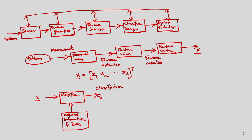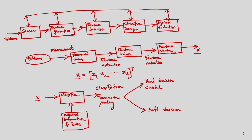Classification means decision making, and there may be two types of decision making: one is hard decision making and another is soft decision. In hard decision, we consider classical set theory, and in the case of soft decision, we consider fuzzy logic.